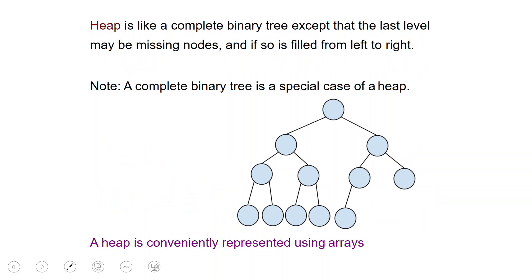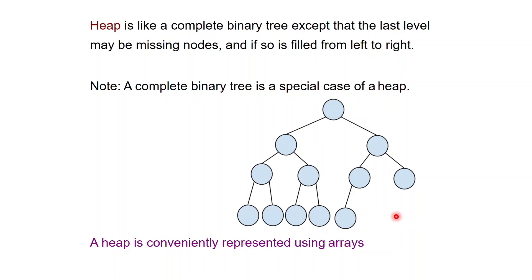What we're really interested in is something called a heap. A heap is like a complete binary tree, except that the last level may be missing some nodes, and what's missing is from right to left — in other words, the last level is filled from left to right. A complete binary tree is a special case of a heap where the last level is also complete, but a heap allows the flexibility of only having some elements in the last level.